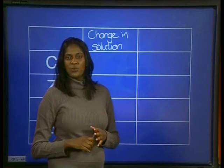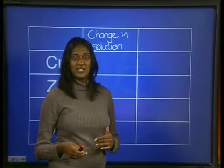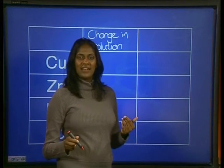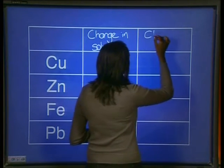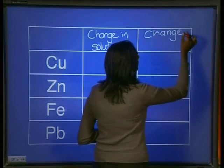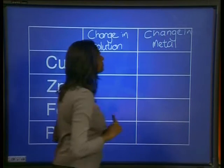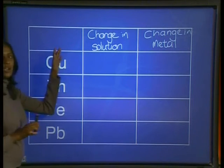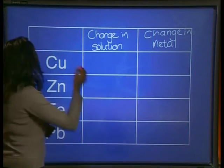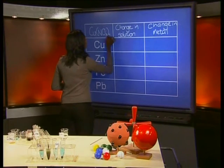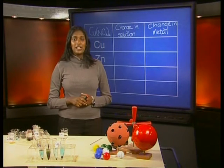In previous reactions, we also noted results when the appearance of the metal changed. Remember the rust coating on the iron nail that was left in water? That could indicate a reaction. So in this column, we'll put in the change in metal. And in this column over here, we'll write in the solution that we're working with, which for now is copper 2 nitrate. Now, let's see if our reactions show any results.